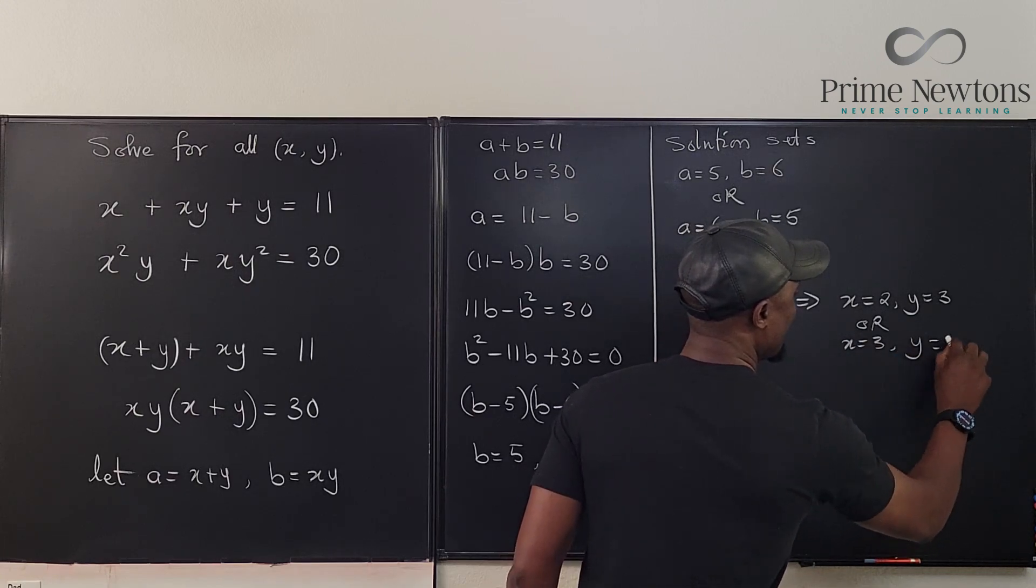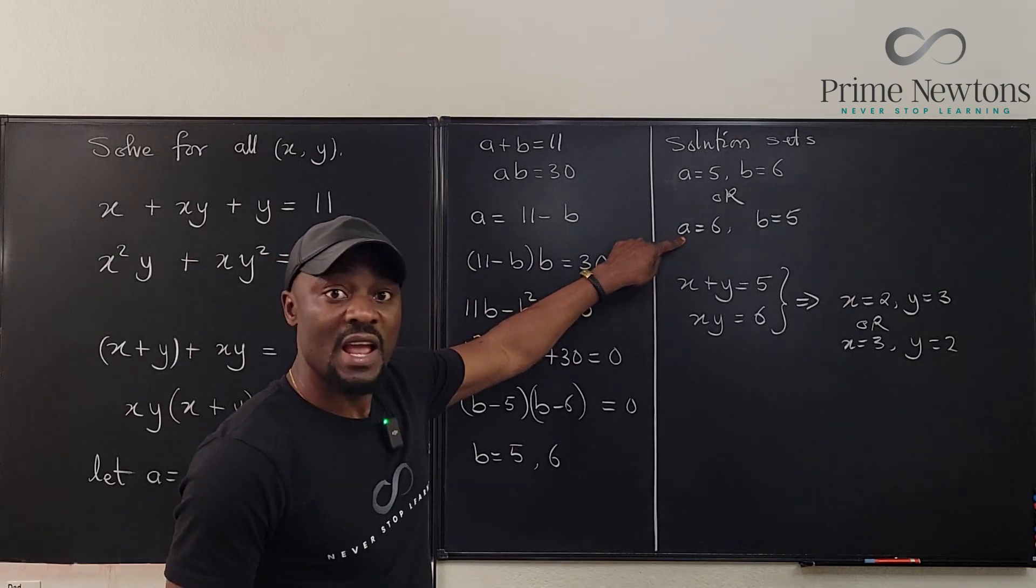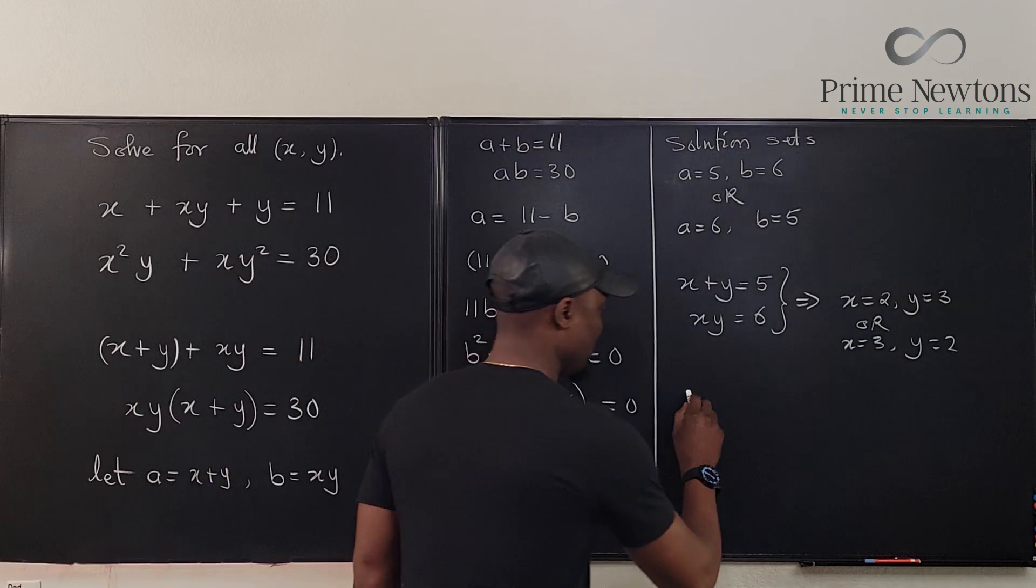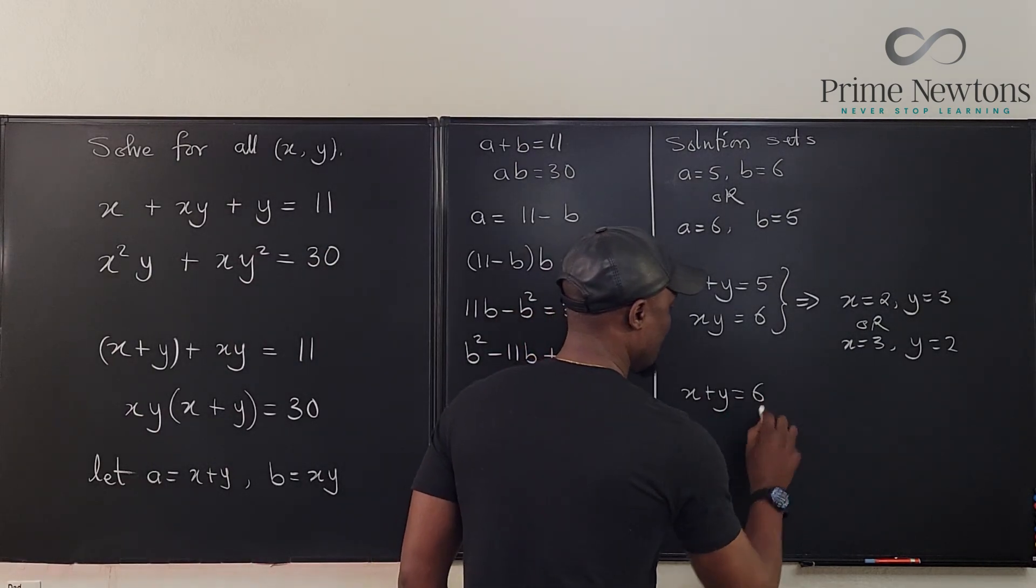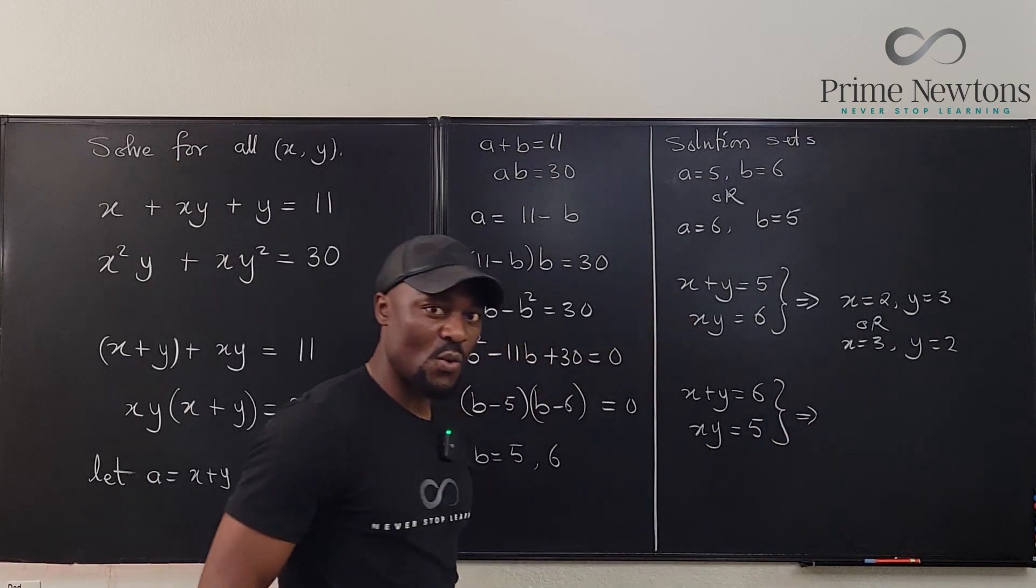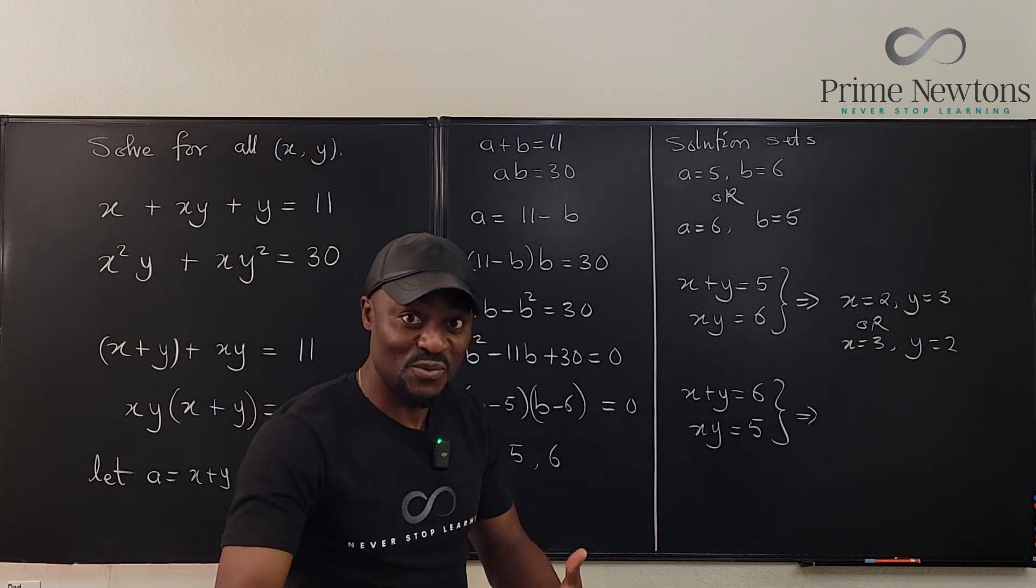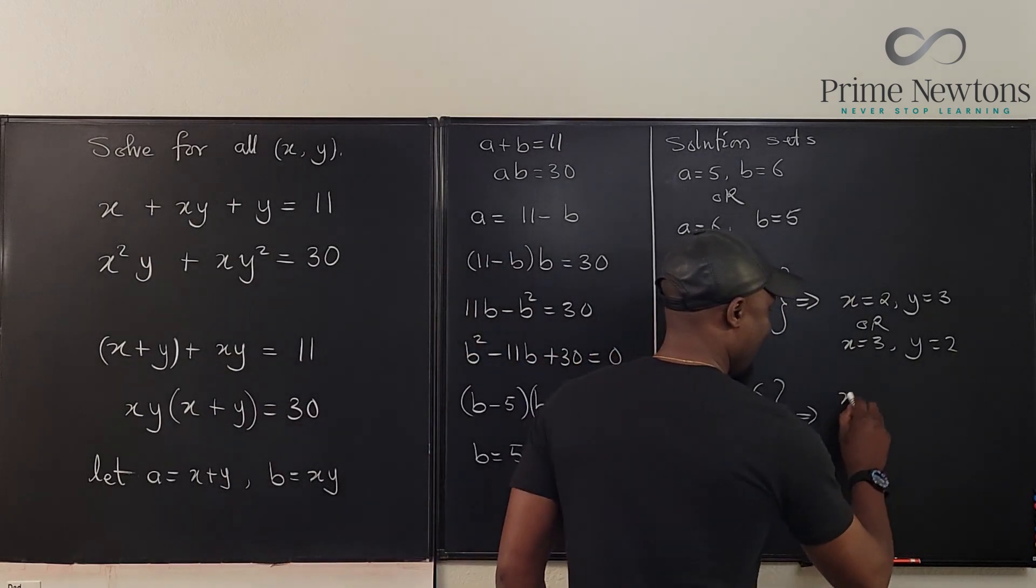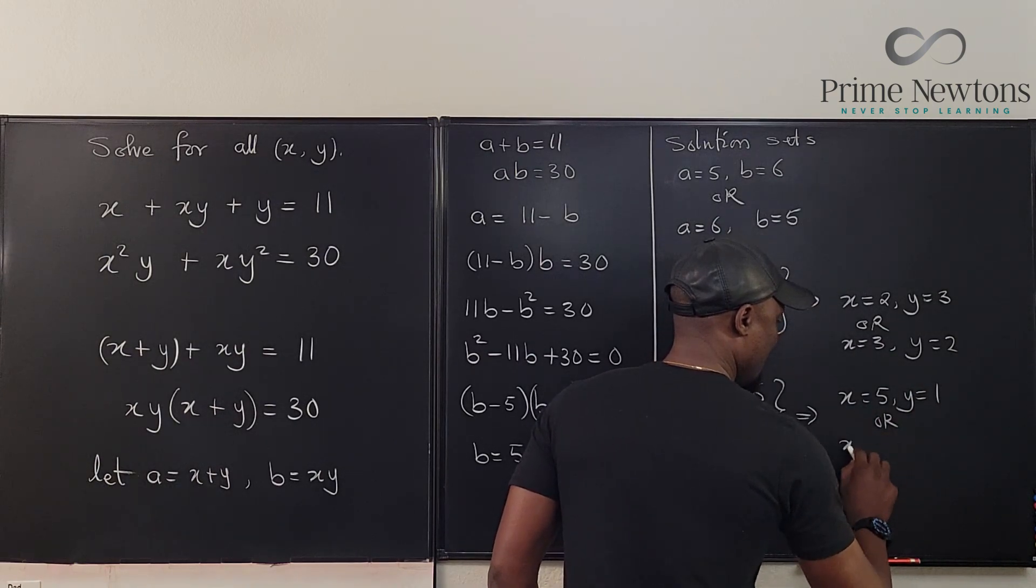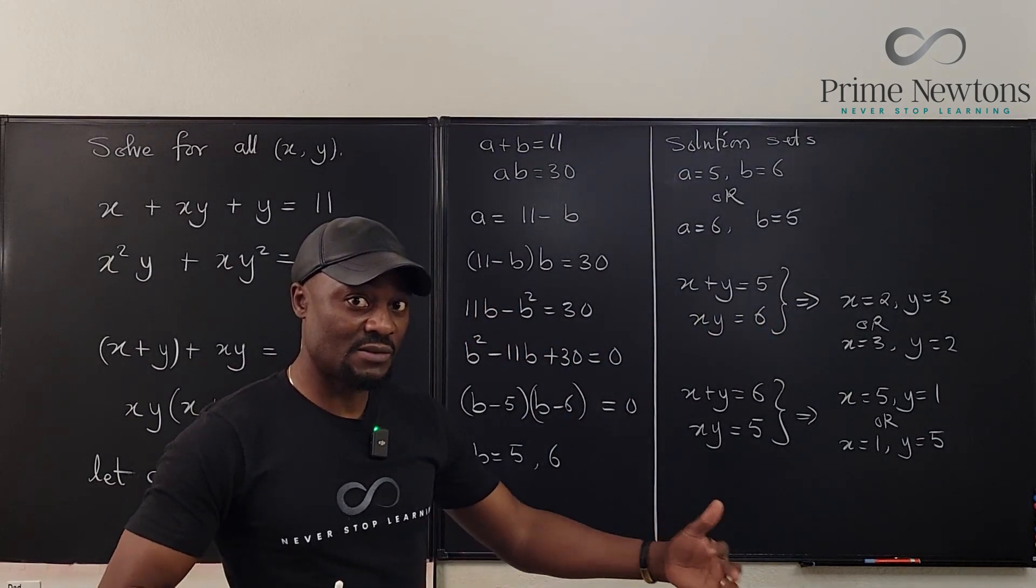Now we go to the second case of when a, what is a again? a is the sum. So you have another system: x plus y equals 6 and xy equals 5. What do you get? What two numbers will you multiply to get five but when you add them you get six? Well, it's five and one. So we can say that x equals 5, y equals 1, or x equals 1, y equals 5. So in total we have four sets of solutions.